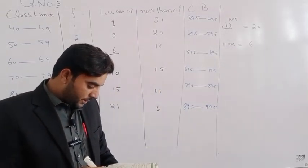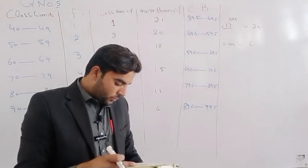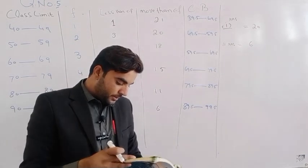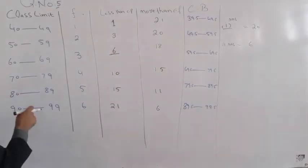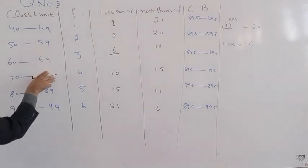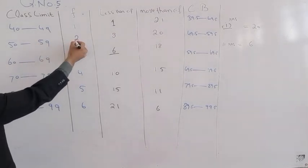Third part asks: number of students who scored marks between 50 and 70. Students who got between 50 and 70 marks - that means more than 50 and less than 70.